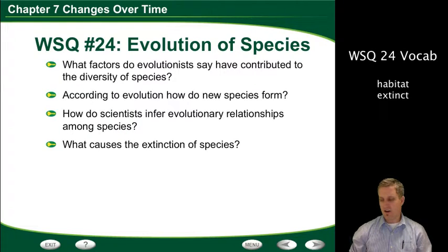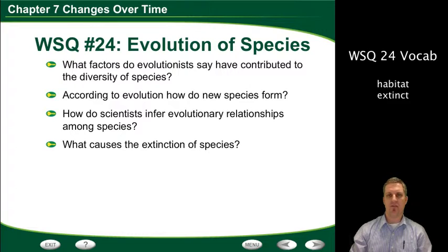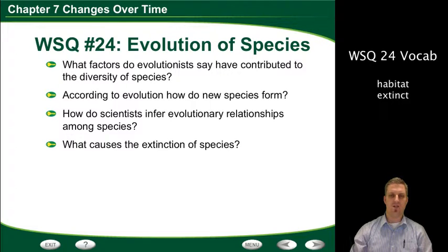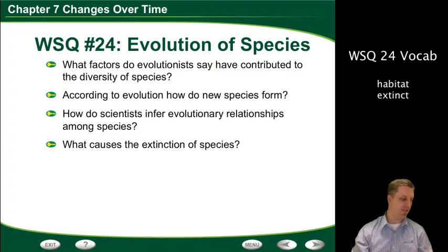Just continuing on in our conversation on macro evolution. Today we're going to talk about what the different factors are that evolutionists say have contributed to the diversity of species — how come there are so many different types of species? We're going to ask, according to evolution, how do those species actually form? How do scientists infer evolutionary relationships among different species, and who is our ancestor? And lastly, we're going to talk about what causes the extinction of species.